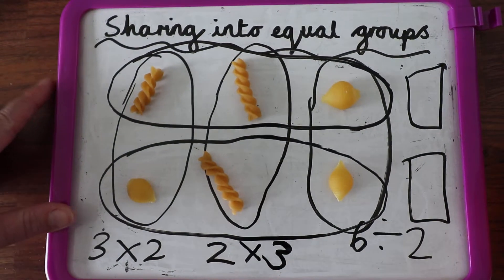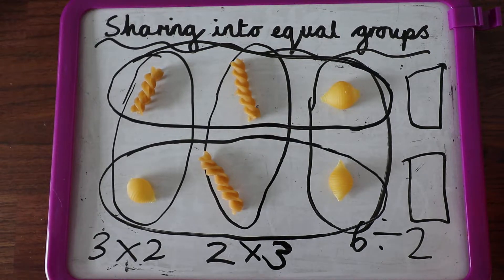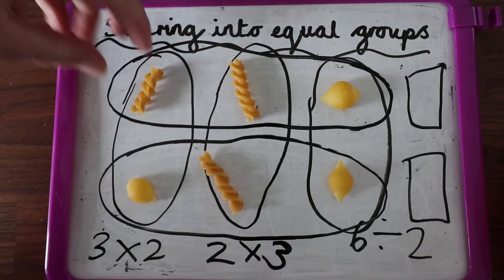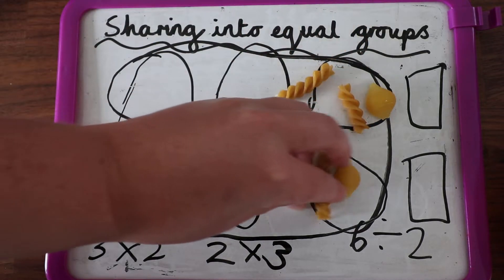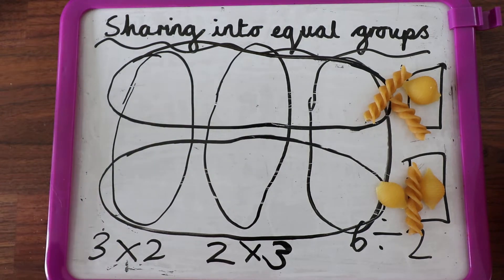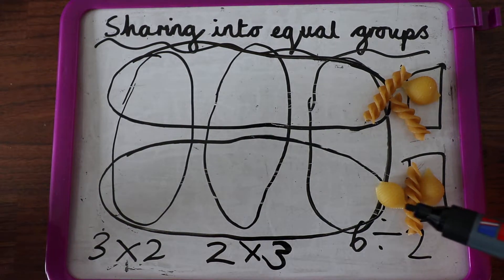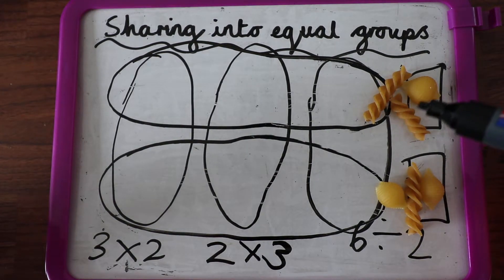So I could say, what is six shared into two groups? And because I've got my groups already, I've drawn around them. I know that's a group and I know that's a group. I could just move them and I need to make sure I've got equal amounts. I've got one, two, three, one, two, three.